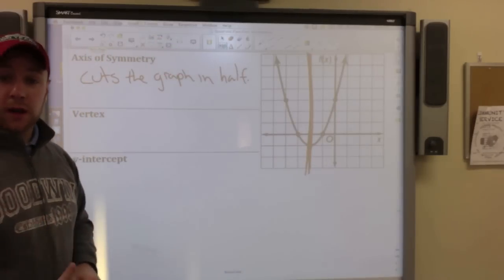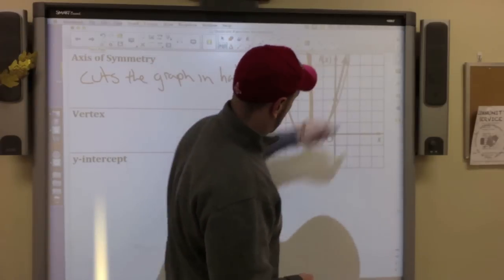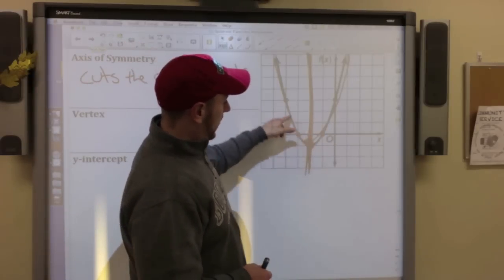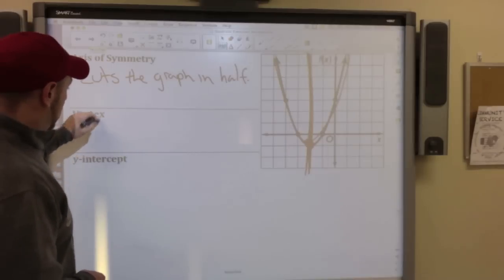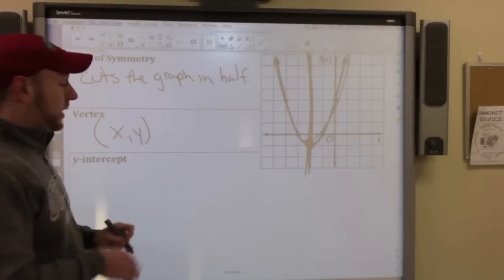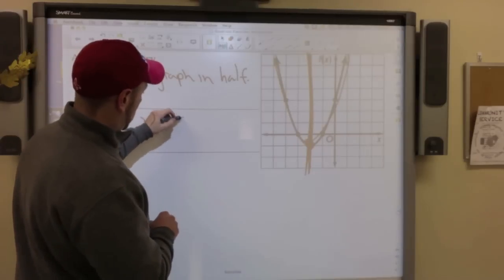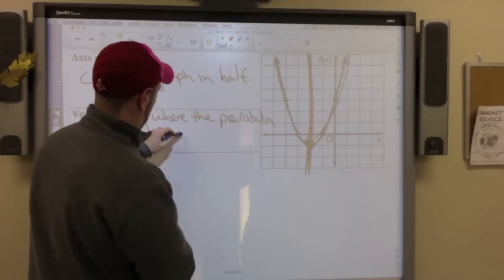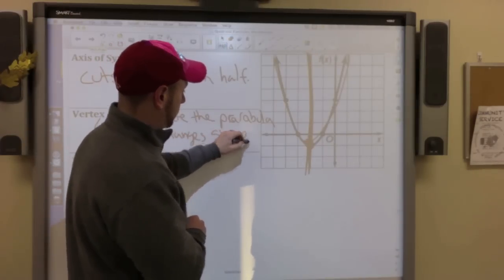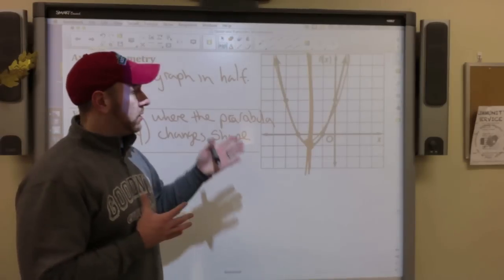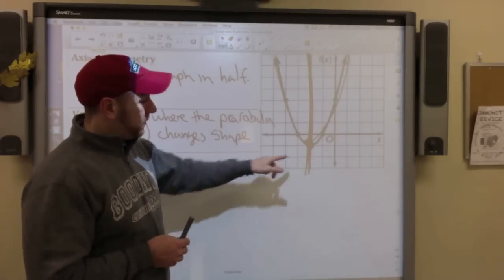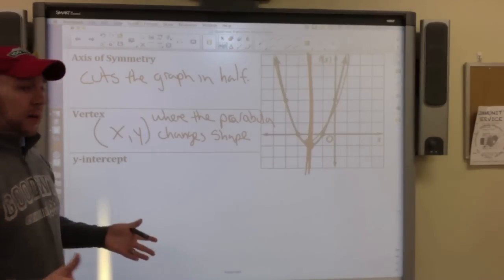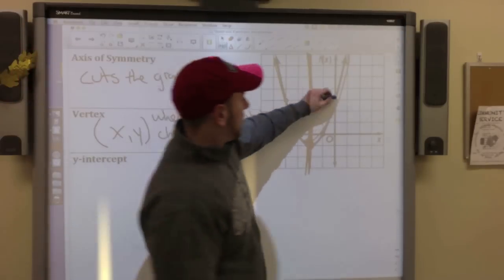The vertex is found on that axis of symmetry. The vertex is that bottom most point, or the top most point. It's where this direction changes. And it's x comma y, where the parabola changes the shape. We're going to discuss how to find where the vertex is later. The y intercept hasn't changed from when you were graphing y equals mx plus b to a parabola like this. That's where it crosses the y axis.